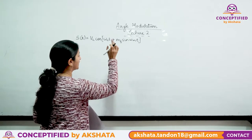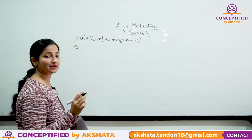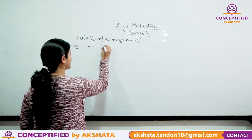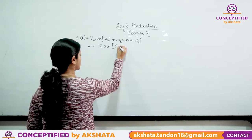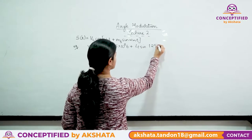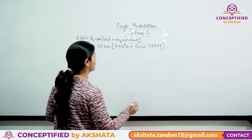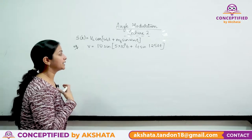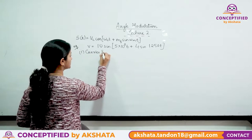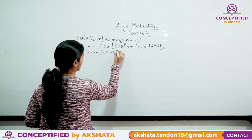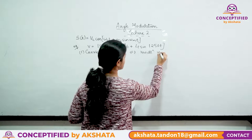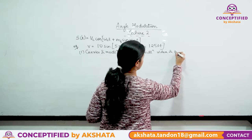This was the equation we had derived. Let's take the example equation: V = 10·sin(5×10⁸t + 4·sin(1250t)). This is our angle modulated wave equation, and we need to find the carrier and modulating frequency.